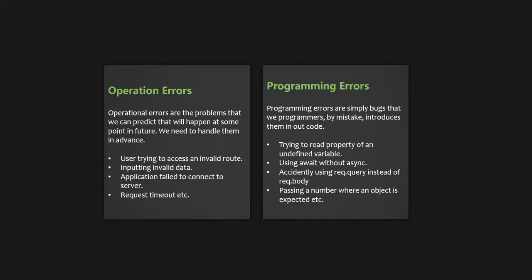When we are talking about error handling with Express, we mainly just mean operational errors, because these are the ones which are easy to catch and handle with our Express application. Express comes with error handling out of the box. All we have to do is write a global error handling middleware which will catch and handle all the errors happening in the application — no matter if the error is happening in the route handler, the model validator, or some other reason.